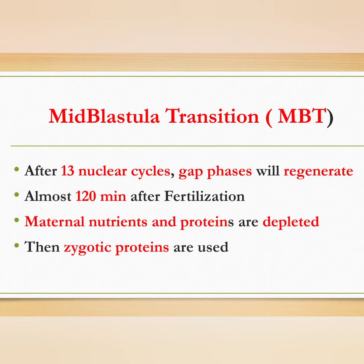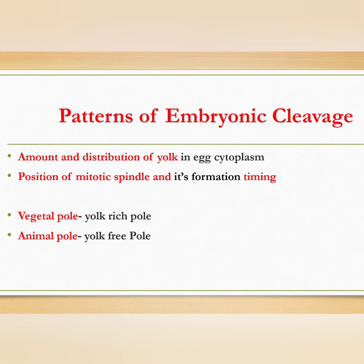The mid-blastular transition is defined as follows: during the first 13 nuclear cycles there are no gap phases. After the 13th nuclear cycle, gap phases are regenerated. This mid-blastular transition occurs approximately 120 minutes after fertilization. Before the transition, maternal nutrients and proteins are used; after they are depleted, zygotic proteins are generated and take over.